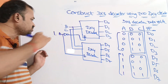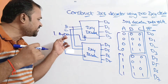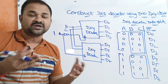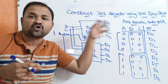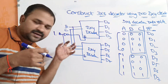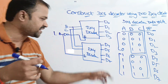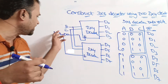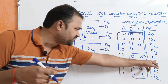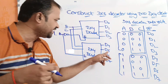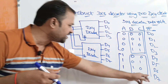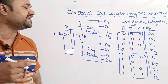Now let us assume A is 1. The complement of 1 will be passed as the enable input to the first 2x4 decoder. The complement of 1 is 0, so the enable input is 0 and the first 2x4 decoder won't work. A value of 1 is passed as enable input to the second 2x4 decoder, so E is 1 and the second 2x4 decoder will work. For the next four combinations where A is 1: if BC is 00 then D4 is active; if BC is 01 then D5 is active; if BC is 10 then D6 is active; if BC is 11 then D7 is active.